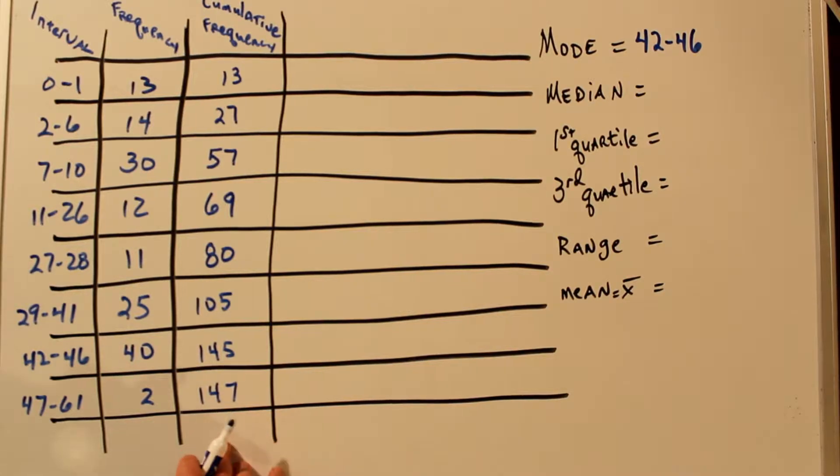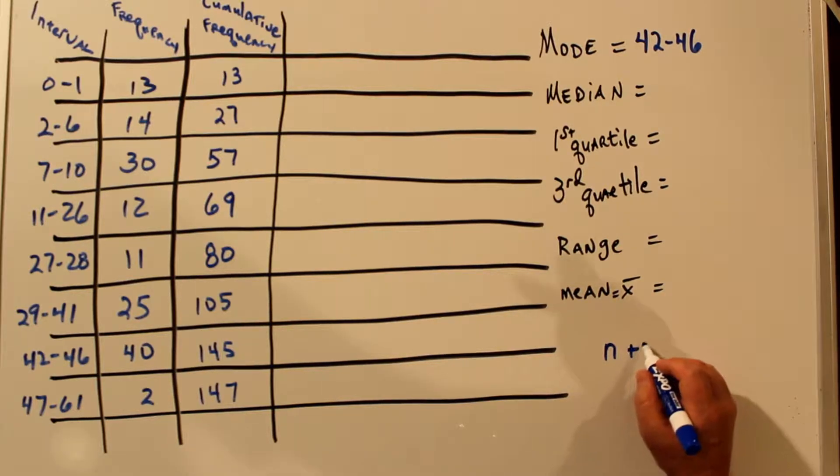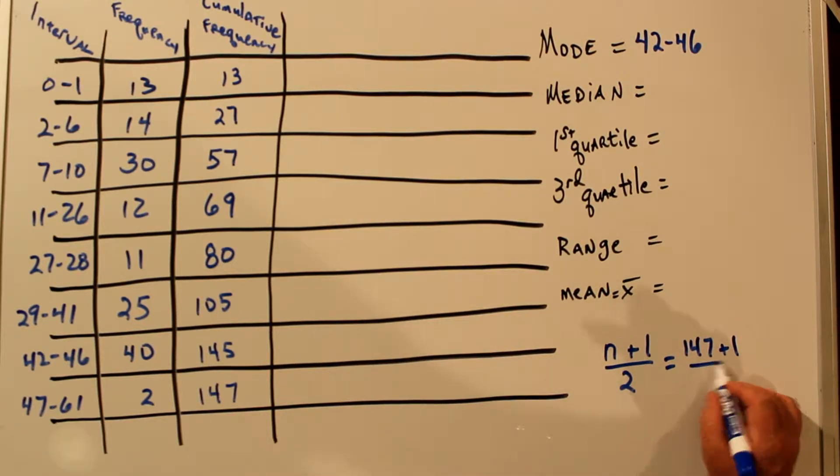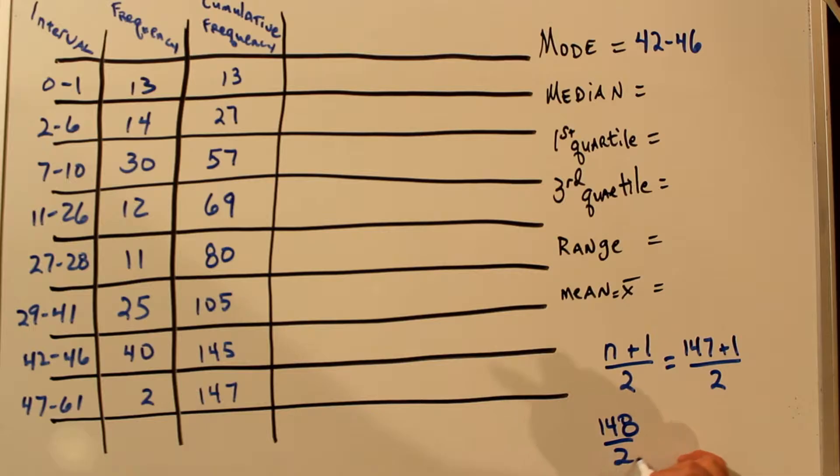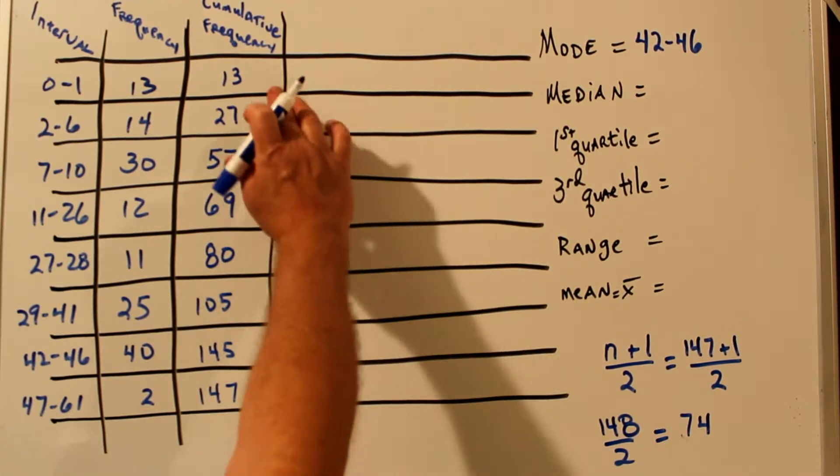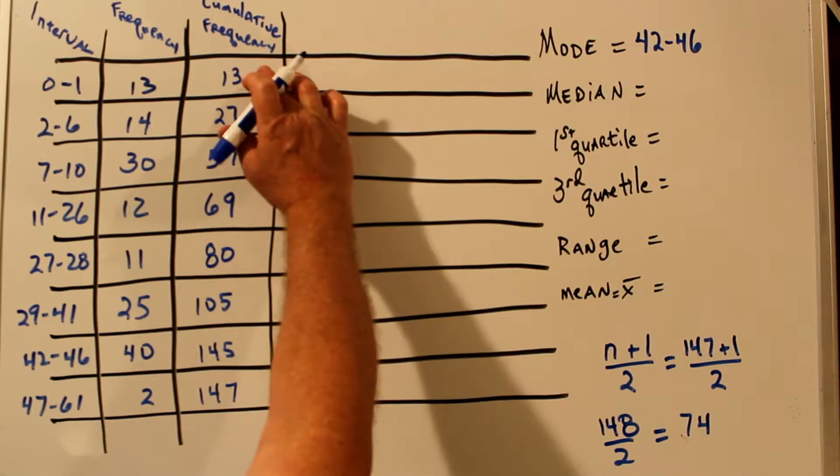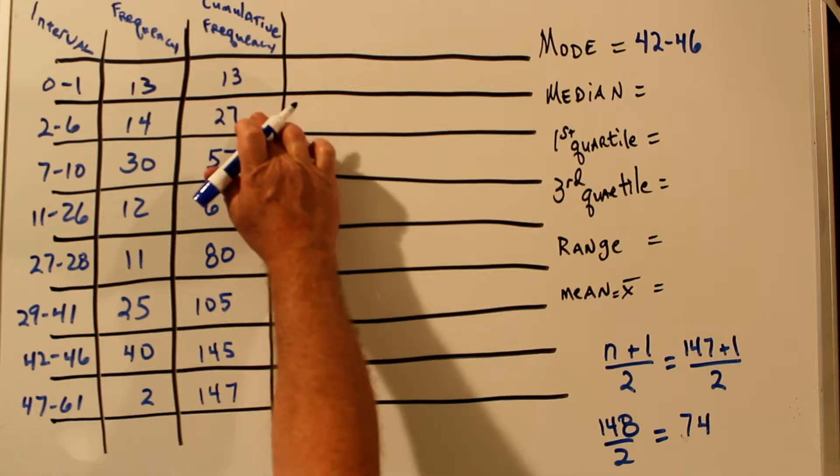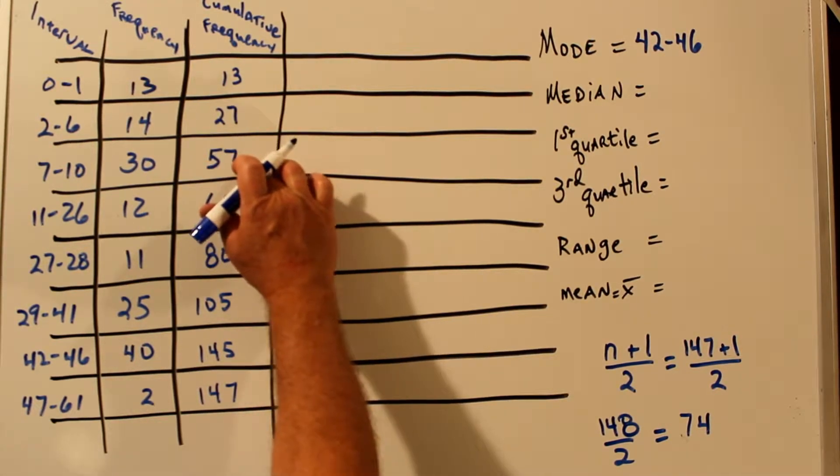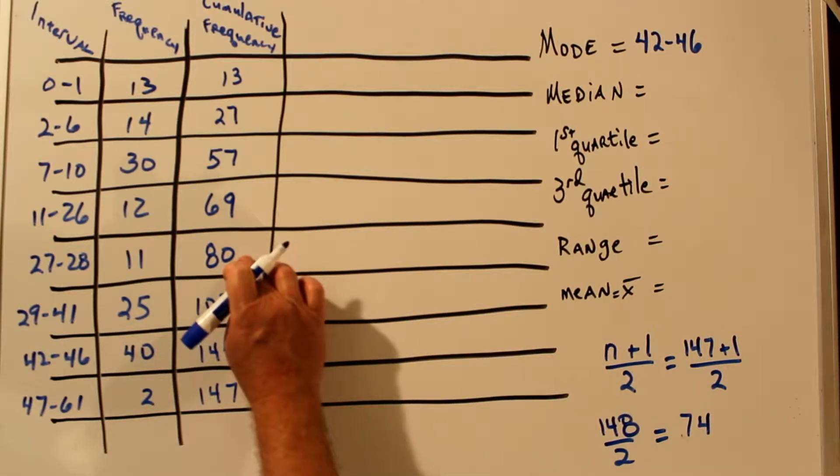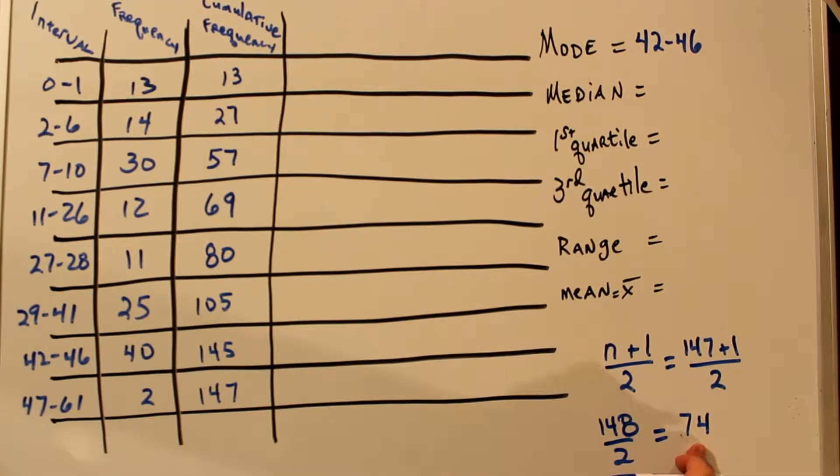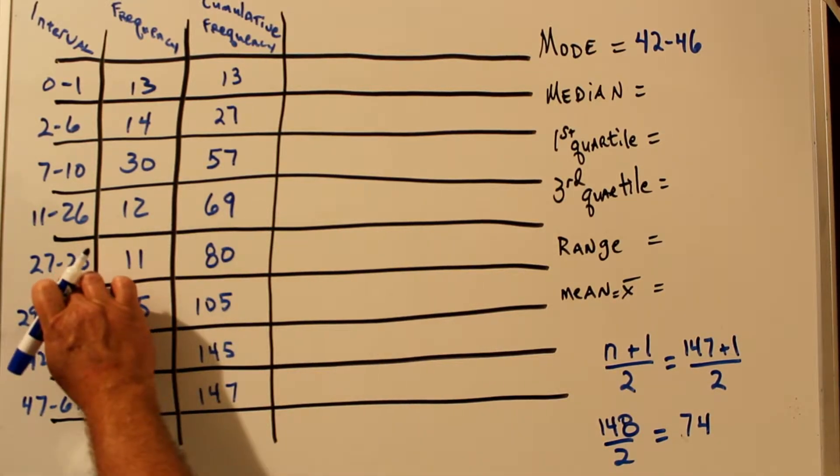Now we have to find halfway and that will be our median category. The way we do that is we take the number of data points and add one to it and divide it by two. So in this case, we have 147 data points, add one and divide by two. So that's 148 divided by two, which is 74. So the 74th data point is the median. And now we have to find which category contains the 74th data point. So we use our cumulative frequency and we're looking for the 74th data point. There's 13 by the end of this category and 27 by the end of this category and 57 by the end of this category and 69 by the end of this category. And here we have 80 by the end of this category. So the 74th data point is in this category, 27 to 28.